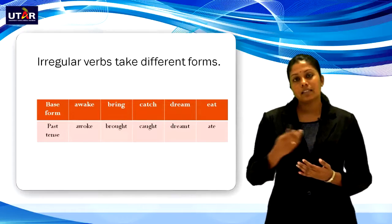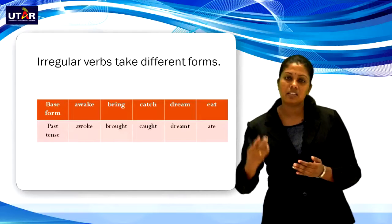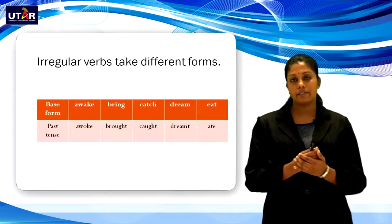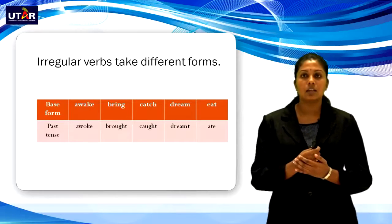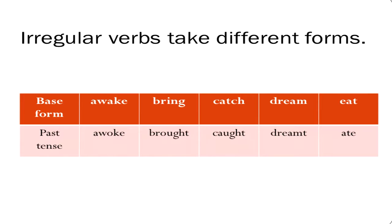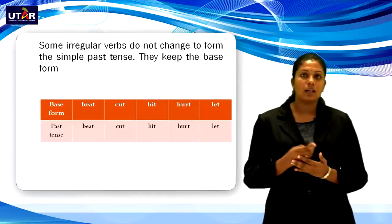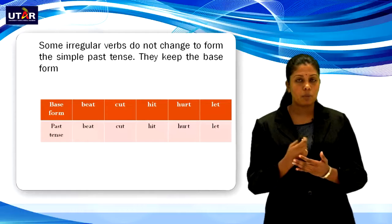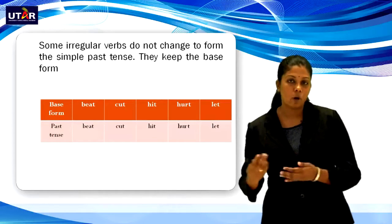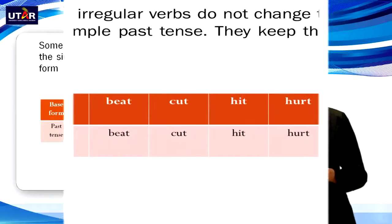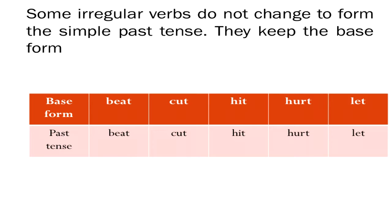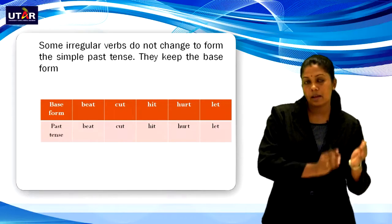Now let's look at irregular verbs. Irregular verbs take different forms. Base form and past form examples: awake → awoke, bring → brought, catch → caught, dream → dreamt, eat → ate. Some irregular verbs do not change to form the simple past tense — they keep the base form. For example: beat, cut, hit, hurt, let. All these verbs remain as the base verb.